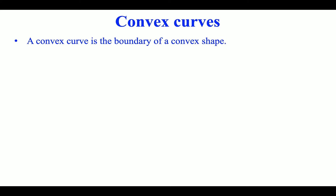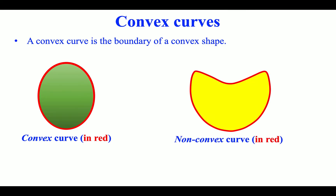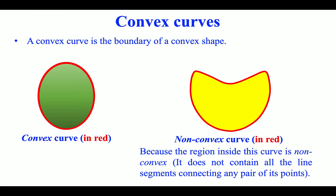Convex curves: a convex curve is the boundary of a convex shape. A convex curve is shown in red. A non-convex curve, also shown in red, is one where the region inside the curve is non-convex — it does not contain all the line segments connecting any pair of its points.